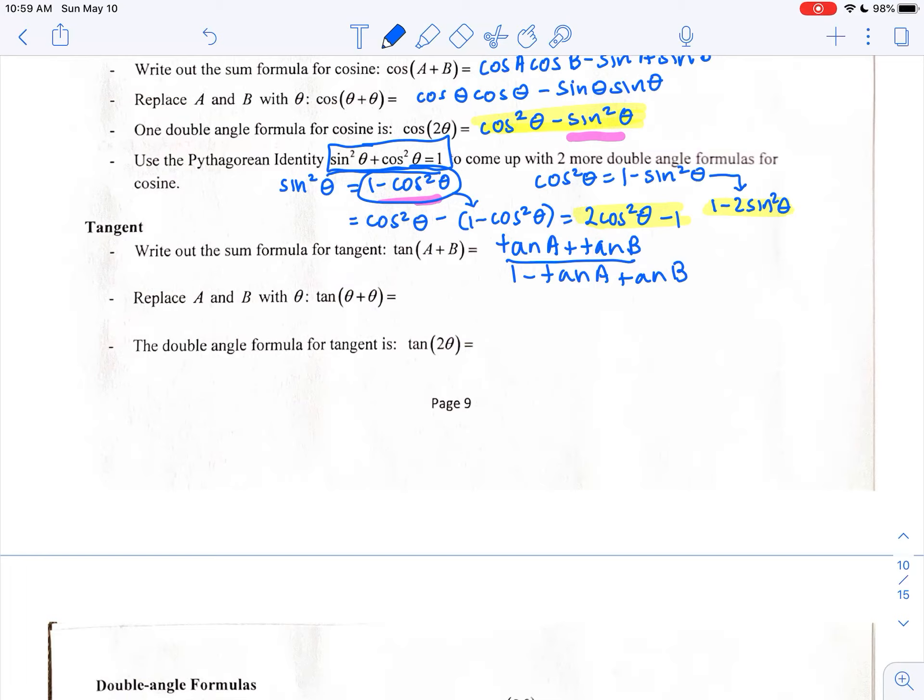So if A and B were the same angle theta, then I would substitute theta in for both A and B. 1 minus tangent of theta, tangent of theta.